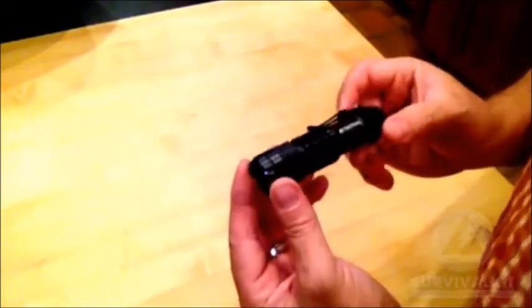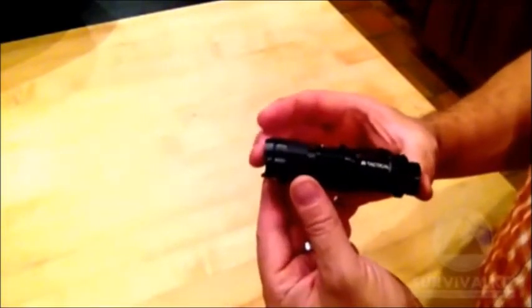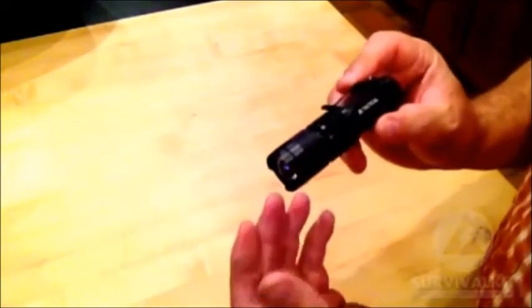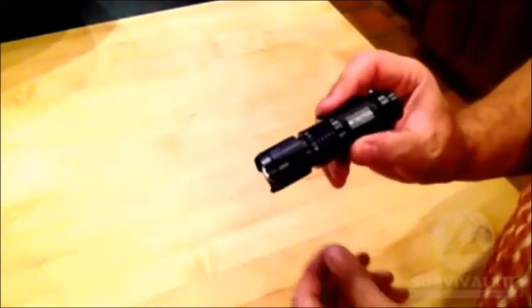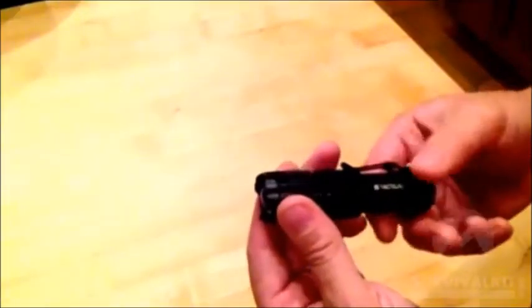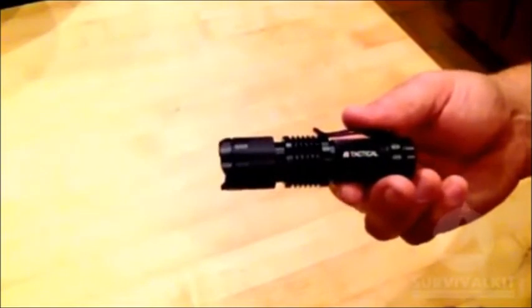Now there's a little bit of a discussion out in the world of flashlights and knives and guns as to what tactical means, and tactical really means the ability to be used in a military or a police procedure to defend yourselves and other kind of tactical moves. J5 is made of aircraft aluminum. It's light. It's very strong mil-spec aluminum.